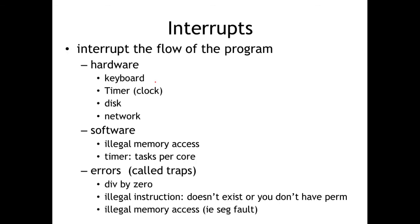The last thing are interrupts. We'll deal a little bit with interrupts as we get towards the end of the course and talk about system calls. Interrupts interrupt the flow of the program. There are a variety of categories: hardware and software errors. A hardware interrupt — for example, a keyboard — tells the CPU to stop what it's currently executing and handle the input coming in from the keyboard. Because the CPU is executing billions of instructions per second, it can handle quite a bit of interrupts and seem to the end user as if everything is running at the same time.